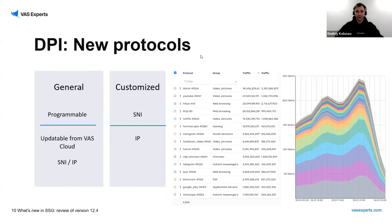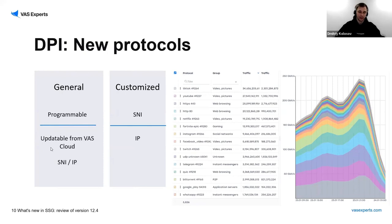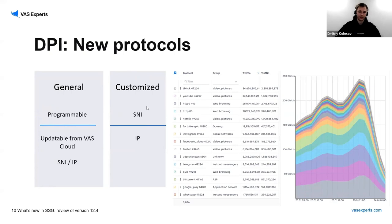DPI new protocols — we also made big changes here. We have two main types of protocols: general and customized. General protocols consist of programmable and updatable protocols stored in our Vasexperts cloud database. Programmable protocols come with the system out of the box — once installed, they are in our code. We also have customized protocols which you can create yourself if a protocol is not in our database — you can do it by SNI or IP.